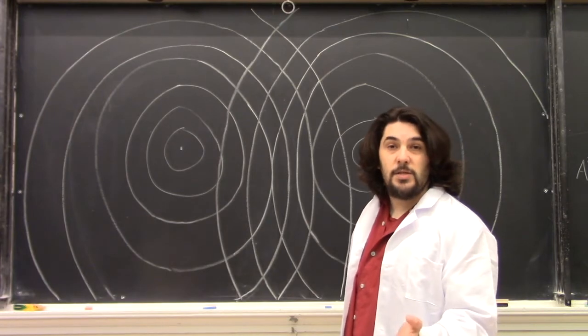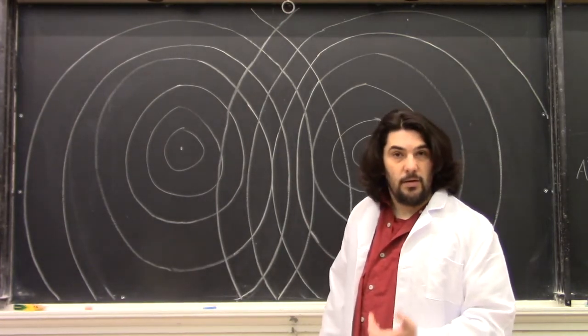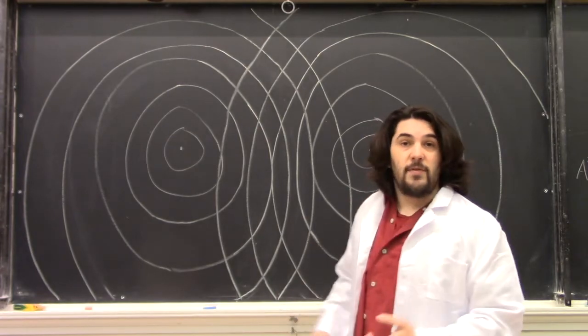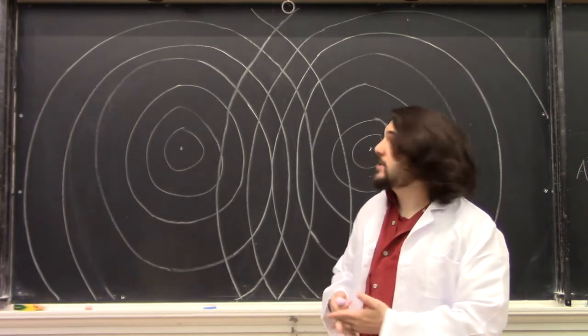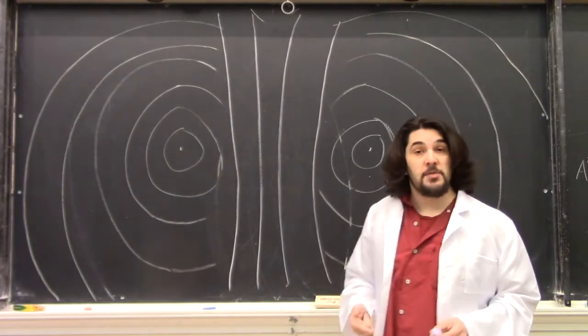And what you'll be able to see whenever we do this in real life are all the points where the waves disappear. That is, where the two sets of waves cause complete destructive interference. These lines will spread out like rays in between these two wave generators.